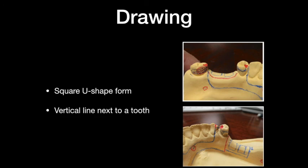The rule for finish line placement — 2 mm medial from the imaginary line along the lingual surfaces of the teeth — applies to the square U-shape form. When you use a vertical line next to the teeth instead, you won't need to apply this same principle.